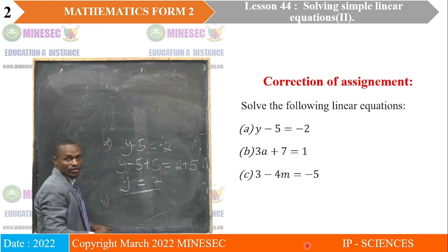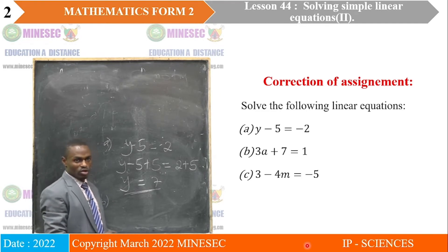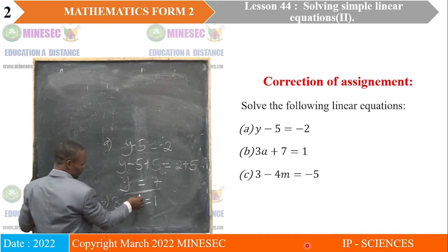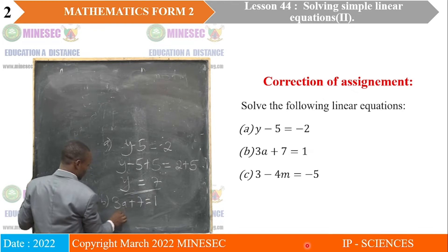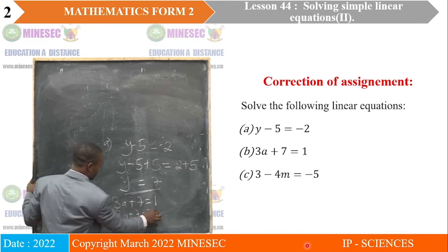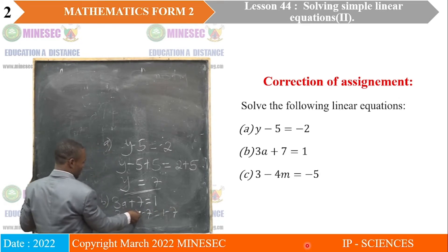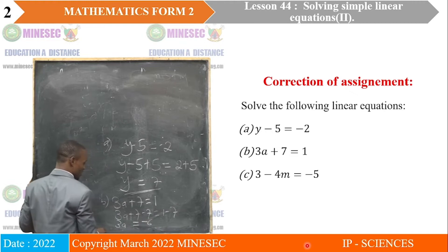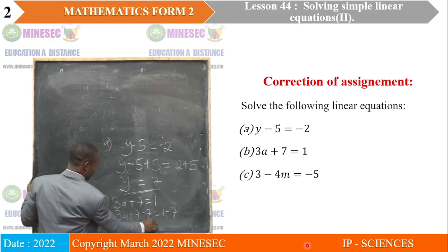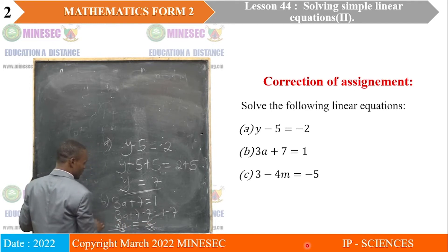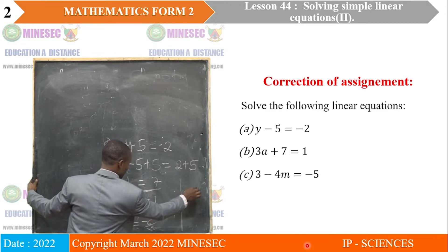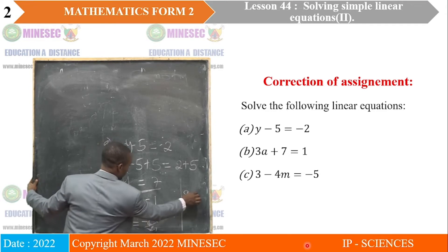B: 3A plus 7 is equal to 1. We subtract 7 from both sides: 3A plus 7 minus 7 equals 1 minus 7. 7 minus 7 reduces to 0, giving 3A equals negative 6. Dividing both sides by 3, A equals negative 2.